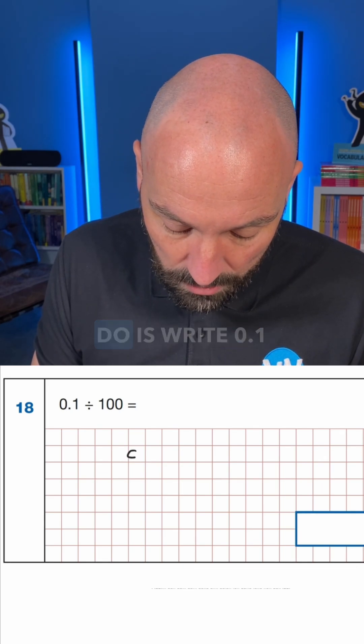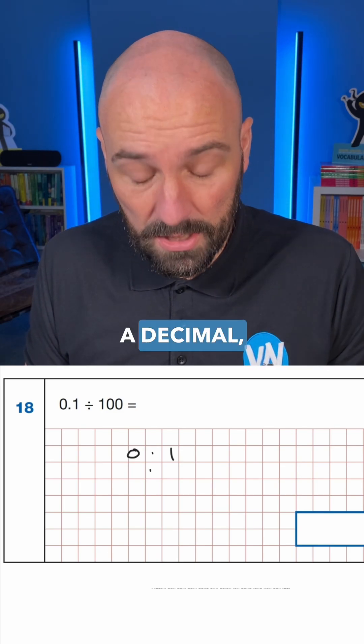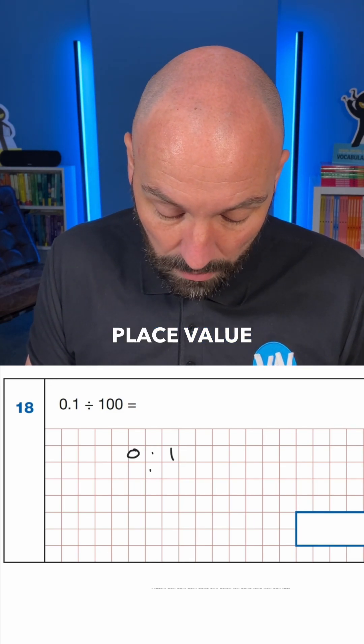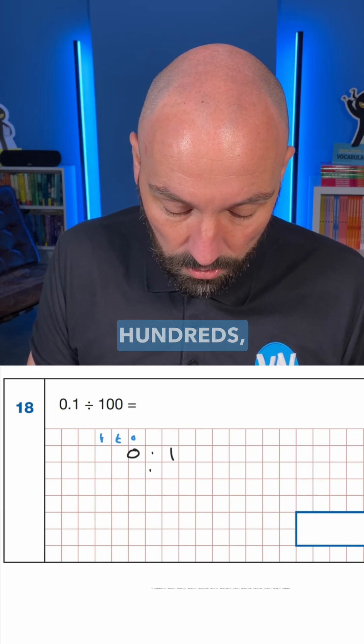So the first thing we're going to do is write 0.1 in as a number and then we're going to, because there's a decimal, we're going to create place value by putting a decimal in that creates ones, tens, hundreds and so on.